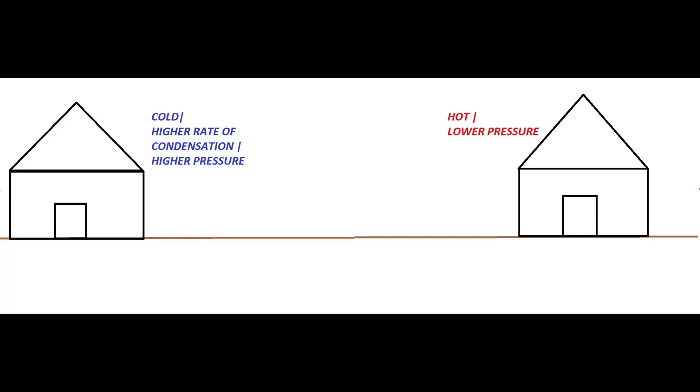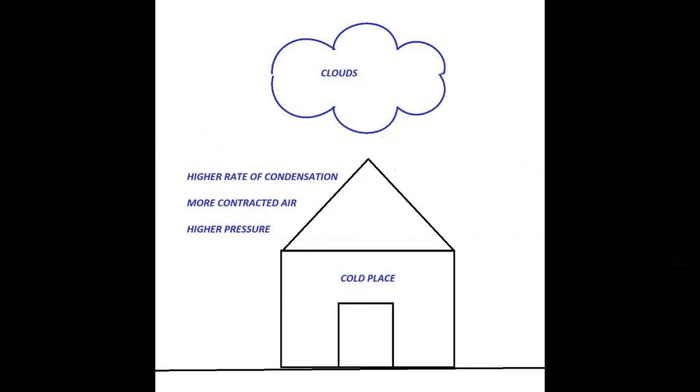Maybe there is a place near your house that is a little cooler. Because that place is cooler, it has a higher rate of condensation which means it has more clouds.